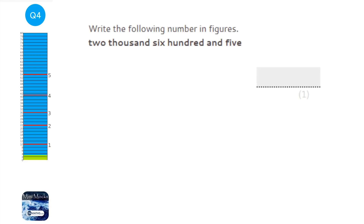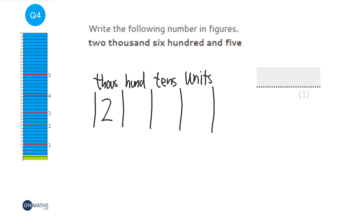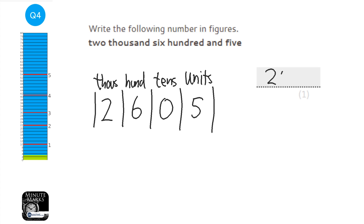This question asks us to convert worded numbers into digits — so it says 2,605. When we think about numbers, we think about what column each digit is in: units, tens, hundreds, thousands. We have 2,000 so I put a 2 in the thousands column, 600 in the hundreds, no tens so I put a 0, and 5 in the units. That gives us 2,605.